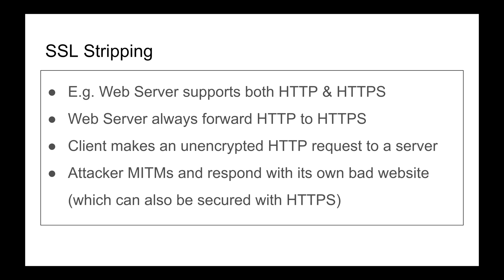Since this GET request is unencrypted, it can be intercepted by a man in the middle. Someone can do ARP poisoning, forward all your traffic to themselves, and see that you want to go to Bank of America. As an attacker, I could create a fake site — maybe a misspelling of bankofamerica.com — that I own, which is secure, and then intercept your request and redirect you to my bad website instead.